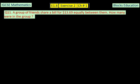In question number 11, it says a group of friends share a bill of $13.69 equally between them. How many were in the group? It means that what it's saying is we're looking for some number that can divide 13.69, and that some number can be any number.